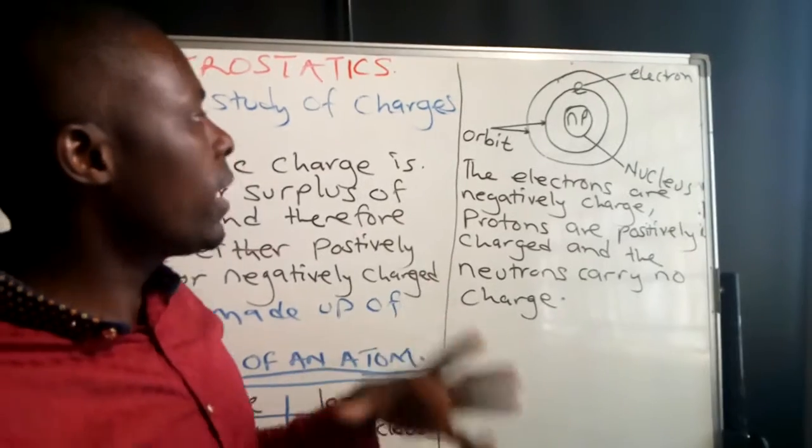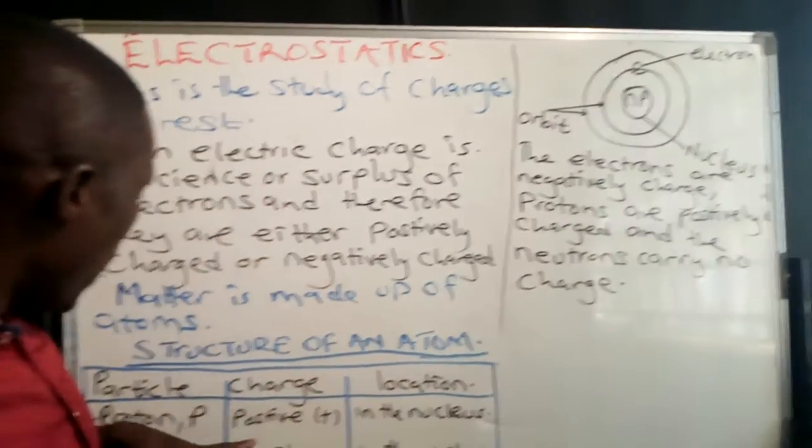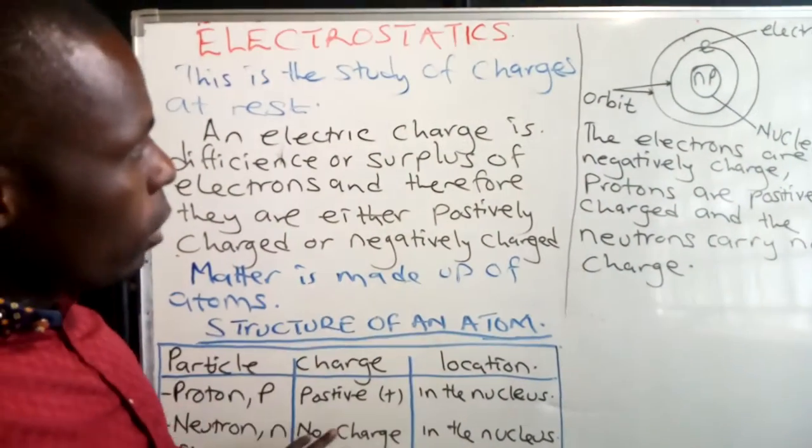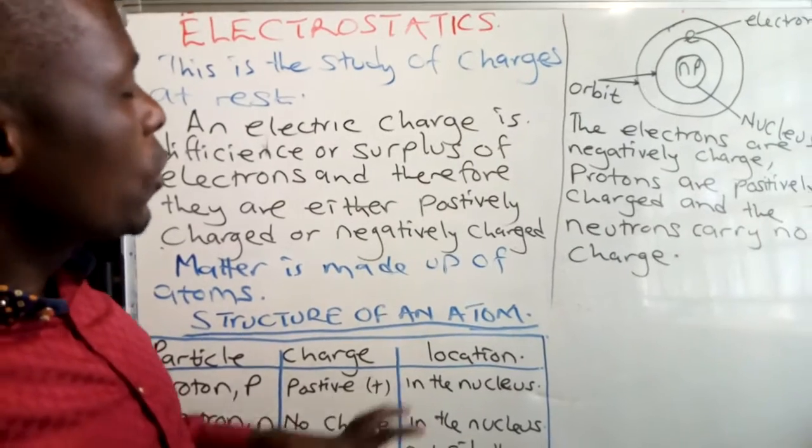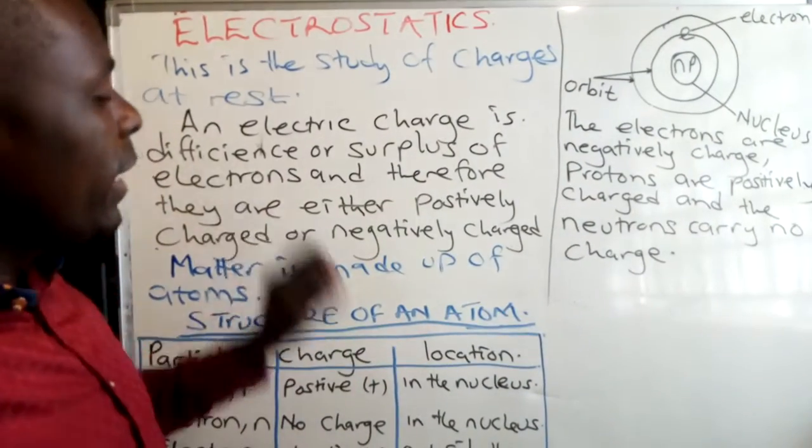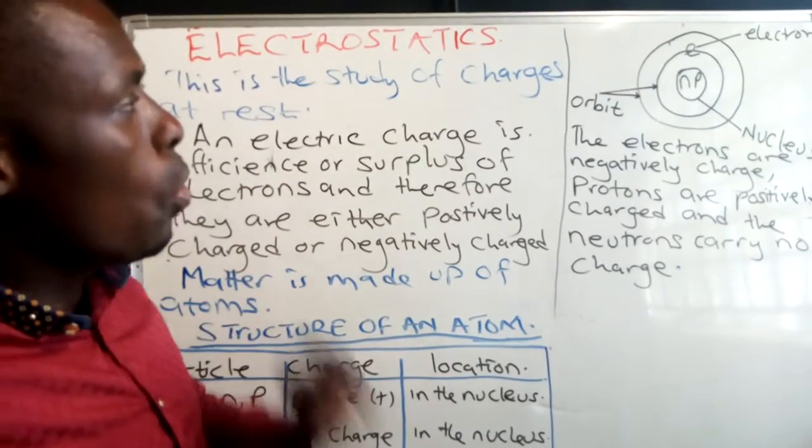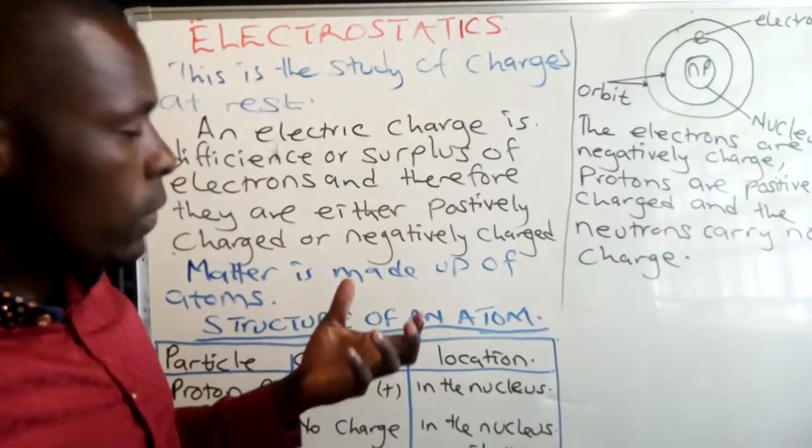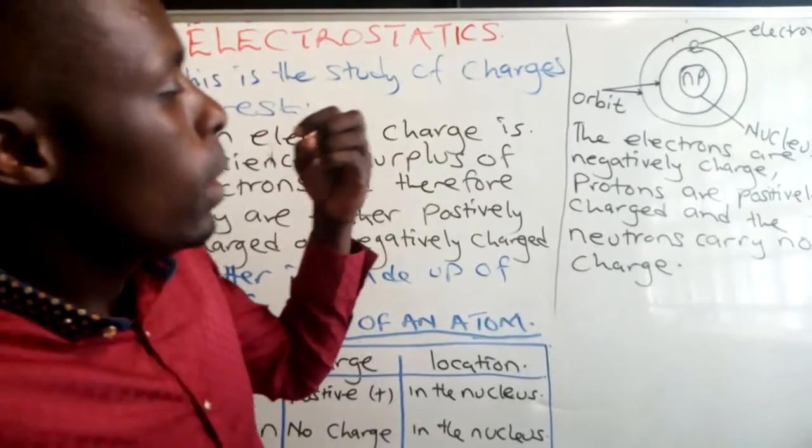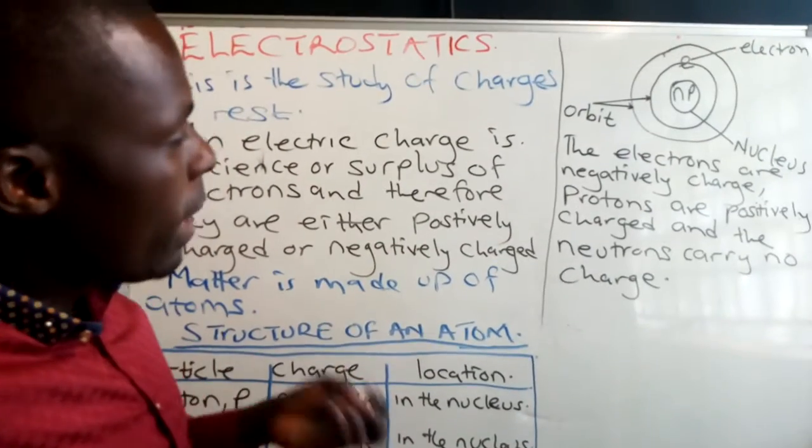When they tell you to describe the structure of an atom, you talk about the particles which are inside. Then also talk about where they are located. Also talk about the signs of those particles or the charges of those particles. Then you get all your marks.